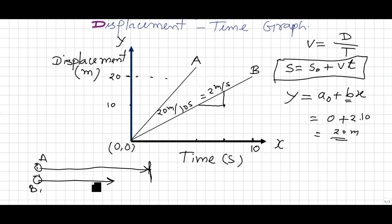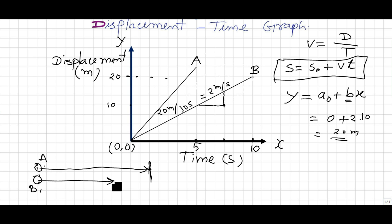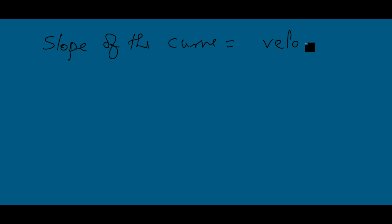Participant A will reach the destination earlier, and B will be behind A. We notice that the time for curve A is 5 seconds, and the time for curve B is 10 seconds. So participant A will only take 5 seconds to cover this displacement, whereas participant B will have covered only a smaller displacement in 5 seconds. So A is winning — showing that the velocity of A was greater than the velocity of B. The conclusion from this displacement-time graph: the slope of the curve is the velocity.